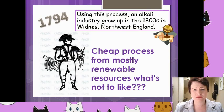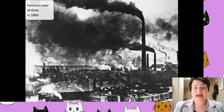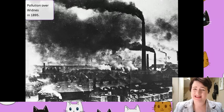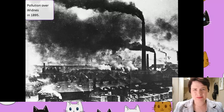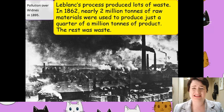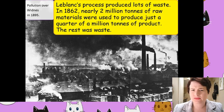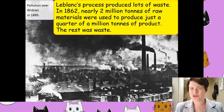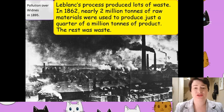Can anyone predict a downside yet? This process came about in 1794, and here is Winnington in 1895 — it doesn't look particularly appealing; you wouldn't want to go there for fresh air. One of the big problems with the Leblanc process is that it was massively polluting and massively wasteful. In 1862, nearly two million tons of raw materials were used to produce just a quarter of a million tons of product. Two million tons of reactants going in, a quarter of a million tons of product out — the rest is waste. That is not efficient use of chemicals at all.